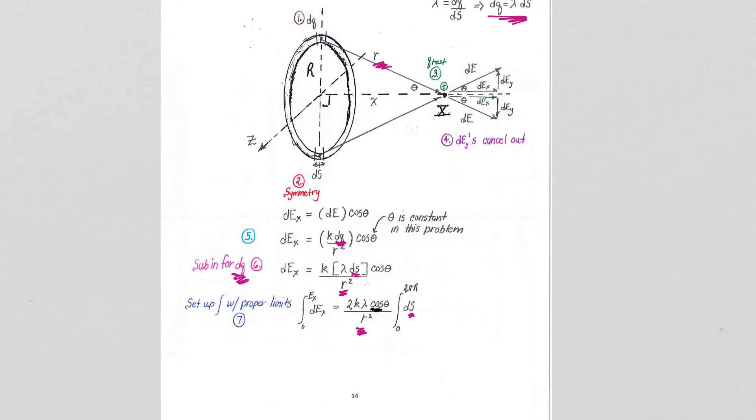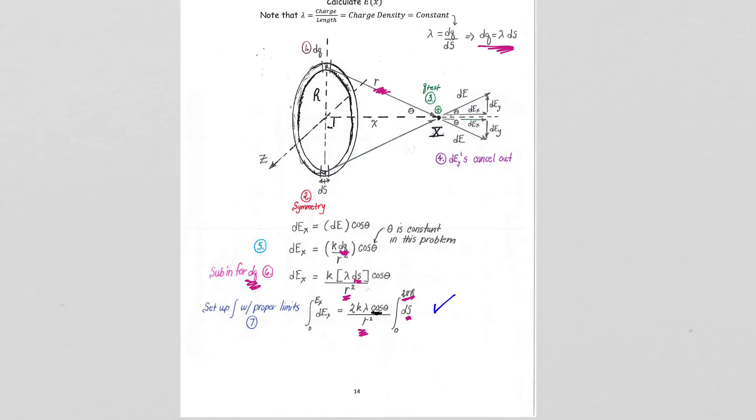And we're going all the way around the circle from 0 to 2 pi r. And again, if you have all of these steps, and the only thing left to do is to take this integral to your mathematician colleague and have them solve it for you, then you will get full credit for our physics class. Now, the integral of ds is s, so this is going to be an easy integral to solve. So let's see what we get for our solution.